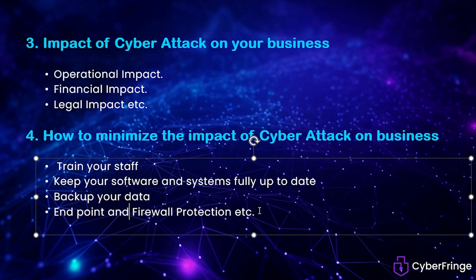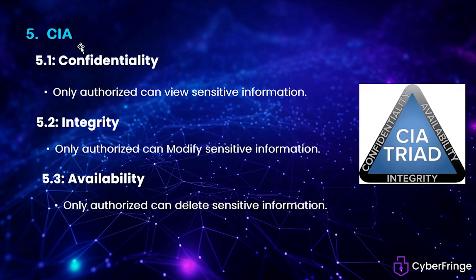Next topic is CIA: Confidentiality, Integrity, and Availability. Whenever we talk about data or cybersecurity, CIA is very, very important. Confidentiality means only authorized persons can use or access sensitive information. For example, on Instagram or Facebook, if your account is private, only your friends or you can see it — that is confidentiality. If other people can see it, that is a confidentiality loss.